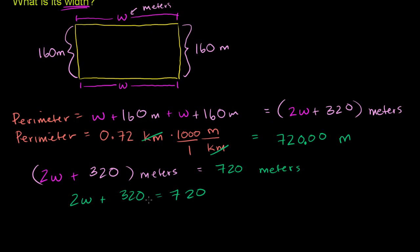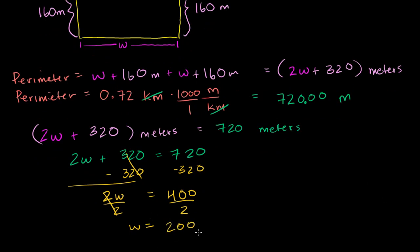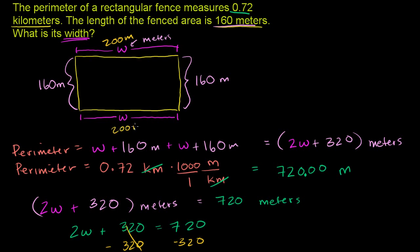We can subtract 320 from both sides of this equation. Remember, an equation says that the left side is equal to the right side. If we want them always to be equal, whatever we do to the left-hand side, we have to do to the right-hand side. So we subtract 320 from both sides. The left-hand side cancels out, and you're left with 2 times the width equals 720 minus 320, which is 400. Now divide both sides by 2, and you're left with w equals 400 over 2, which is 200. And we said that w was in meters, so the width is 200 meters. Let's verify: 200 plus 200 is 400, plus 320 is 720. So the total perimeter is 720 meters, which is the exact same thing as 0.72 kilometers.